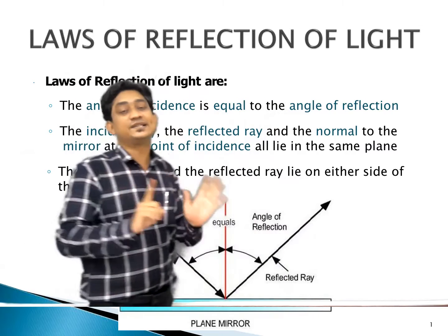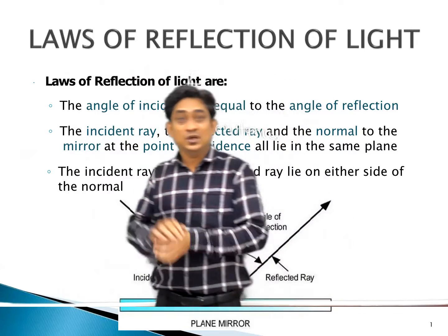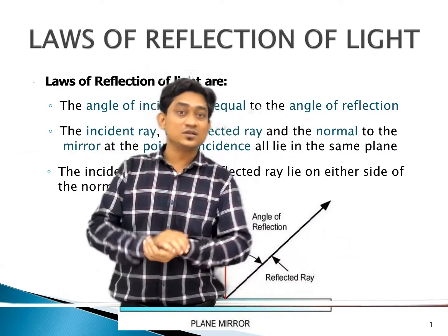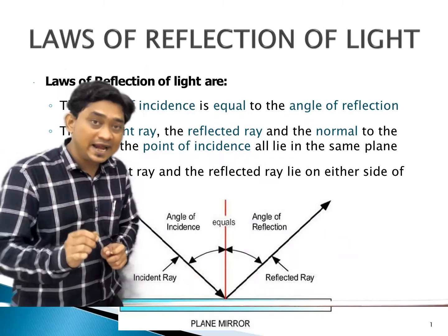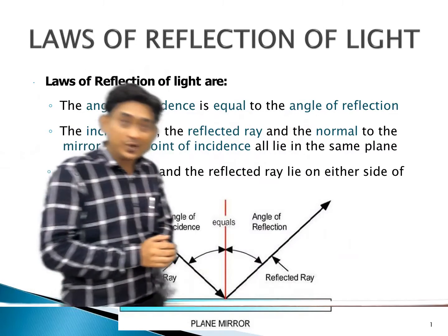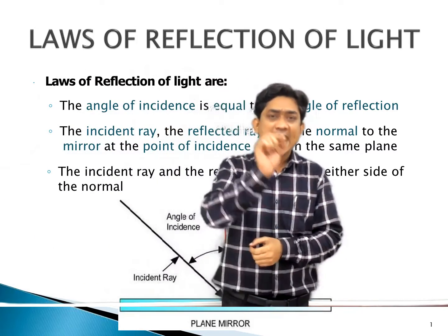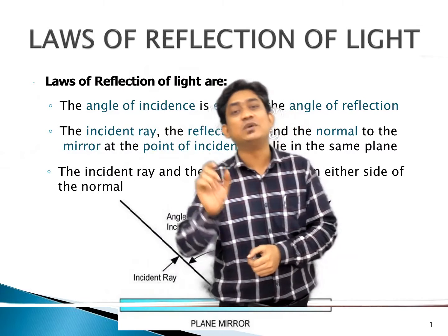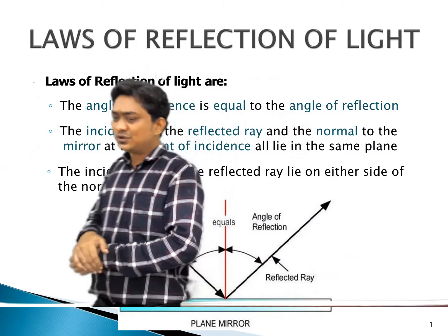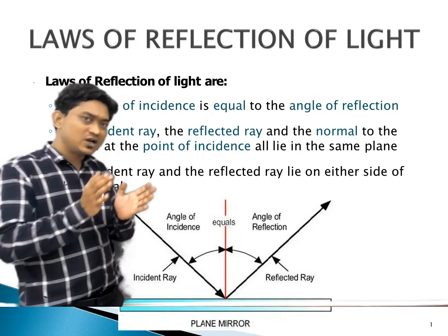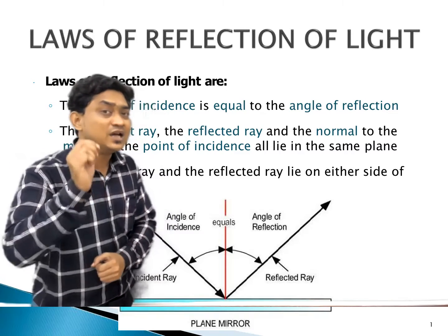These are the six definitions which are very very important. So, what are the laws of reflection of light? First: incident ray, normal, and reflected ray must lie in the same plane. Second: angle of incidence is equal to angle of reflection. If you understand these laws of reflection of light, then tell me the answer.